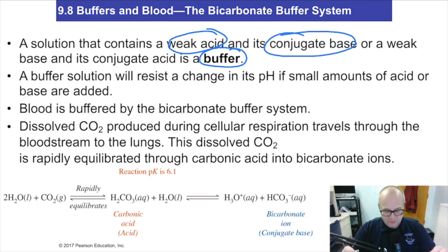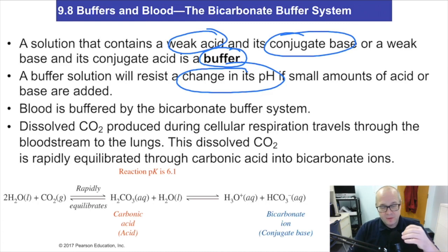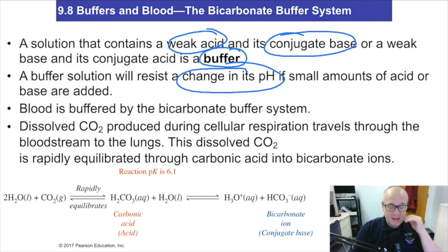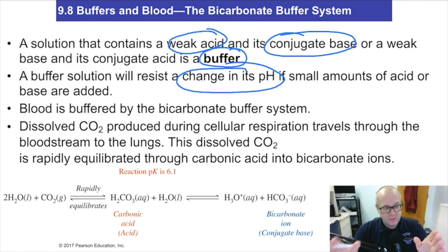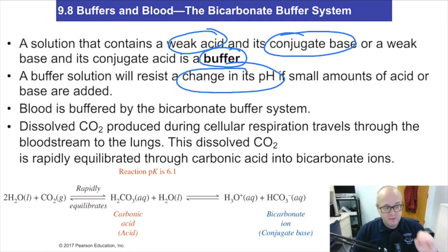The nice thing about a buffer is it will resist the change in its pH. For example, a buffer at 7.5 — you can add a little bit of acid to it and it'll stay basically right around 7.5. You can add a little bit of base, it'll stay right around 7.5. It's not going to change that much. A buffer is a solution with a weak acid and its conjugate base that resists the change to pH when a little bit of acid or base is added.